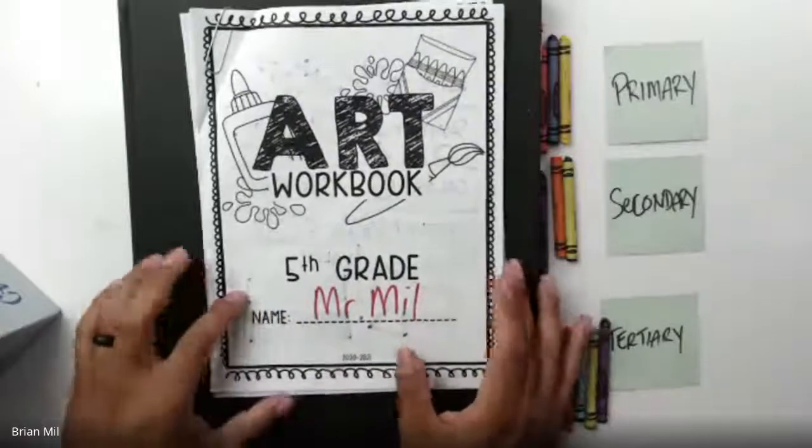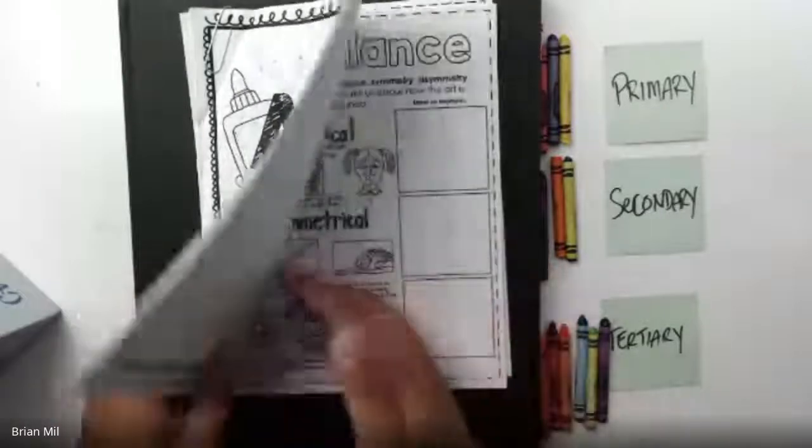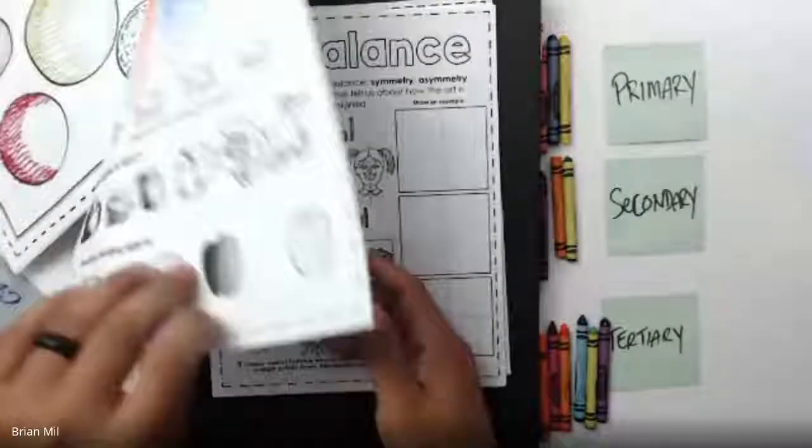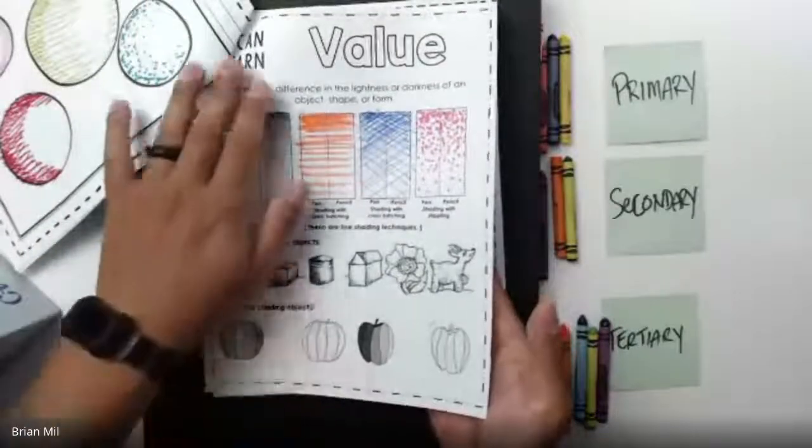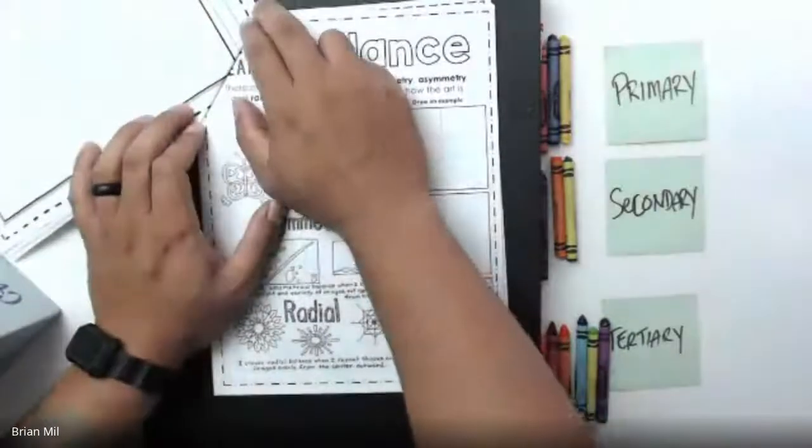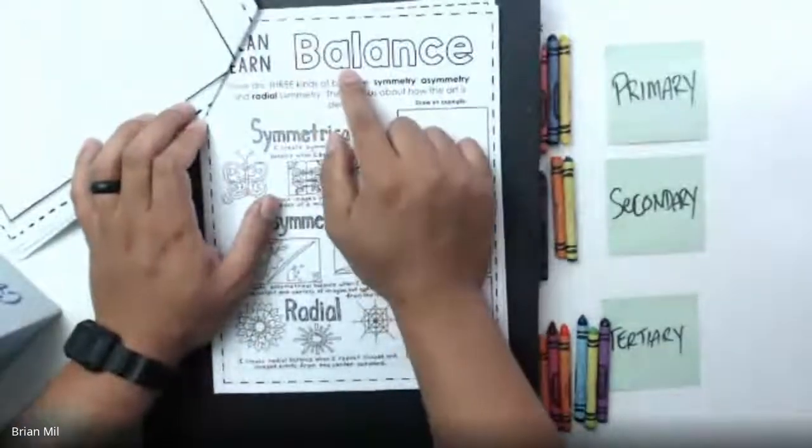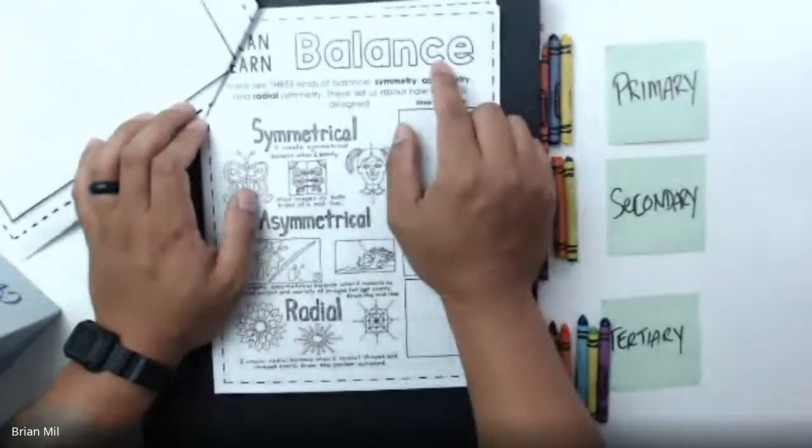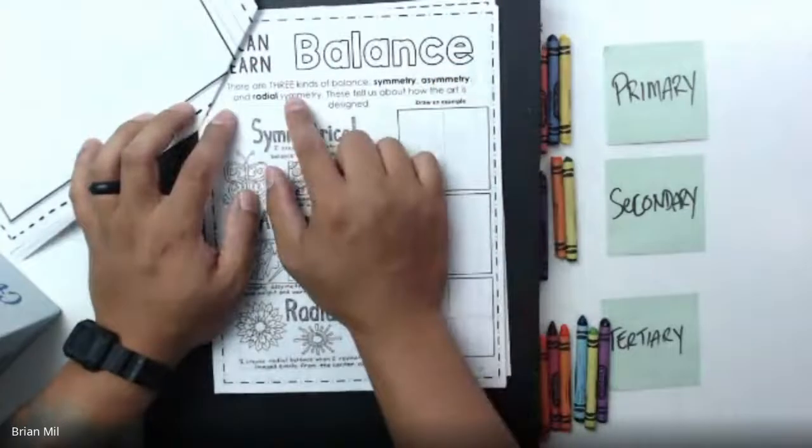All right, so this is our workbook. As always, let's flip over to the page that we're going to start with. We talked about value, which was one of the elements of art, so today I want to talk about one of the principles of design, and one of them is called balance.